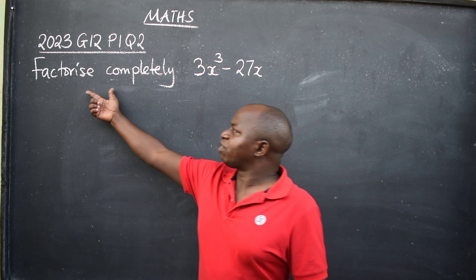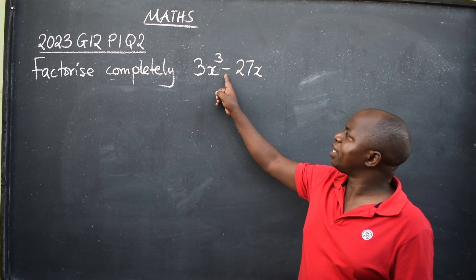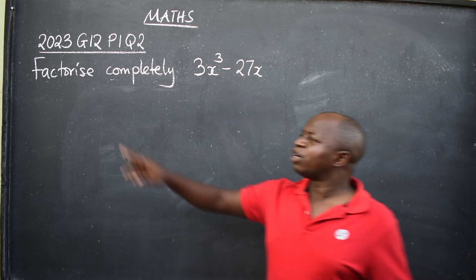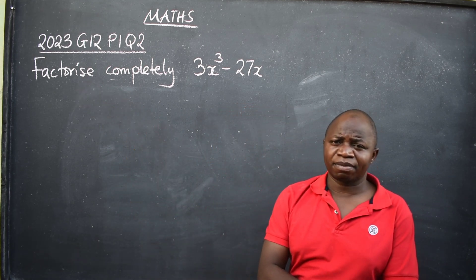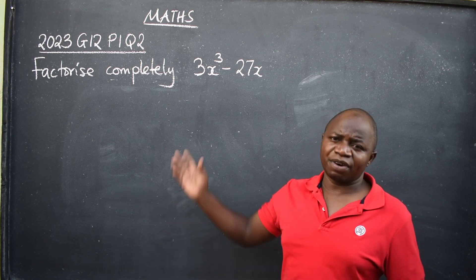Let's look at this question coming from 2023 grade 12 internal examination, question number two, paper one. The question is: factorize completely 3x to the power 3 minus 27x. You are told to factorize. First, identify the topic.